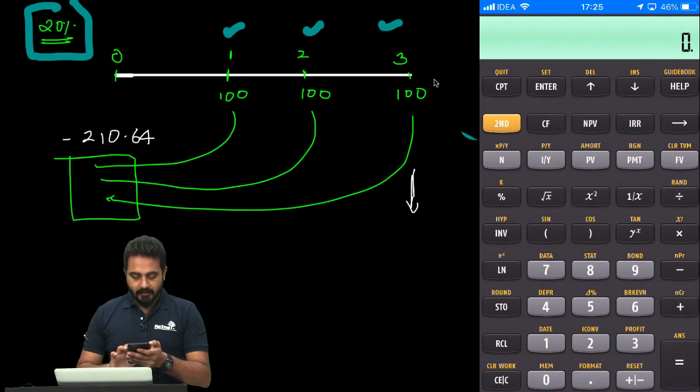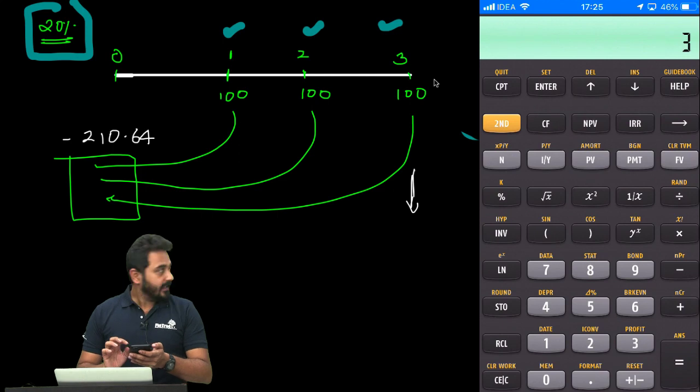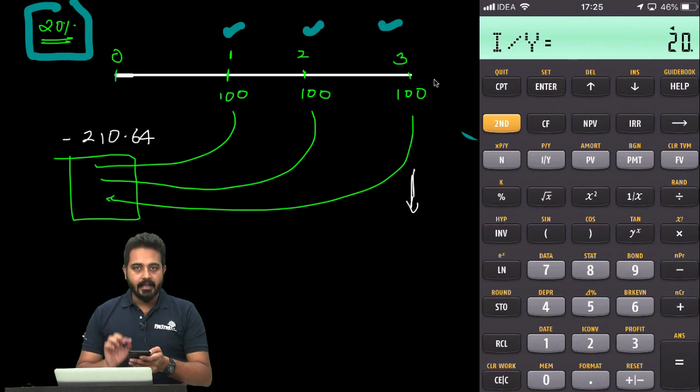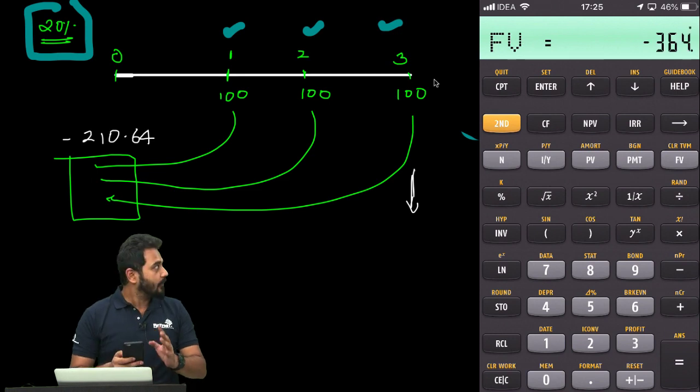We will do Second, Clear TVM one more time. Then 100 PMT, 3 N, 20 IY. And then this time, we will press Compute and Future Value.